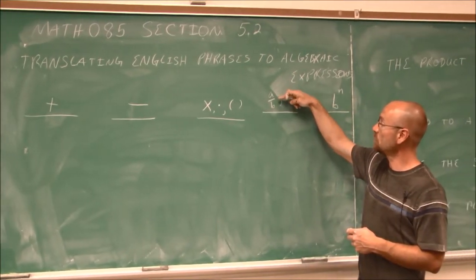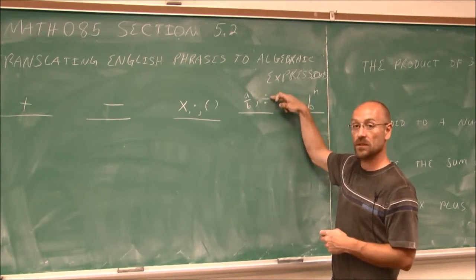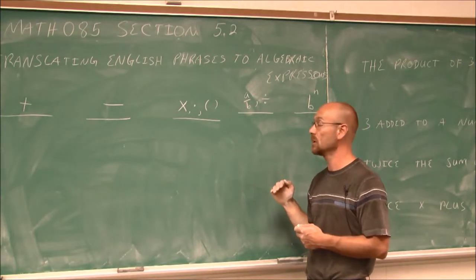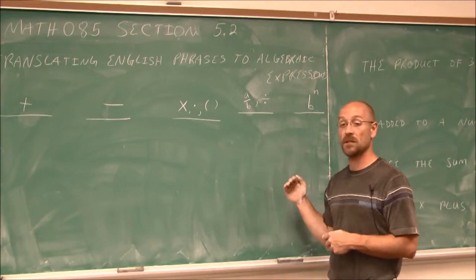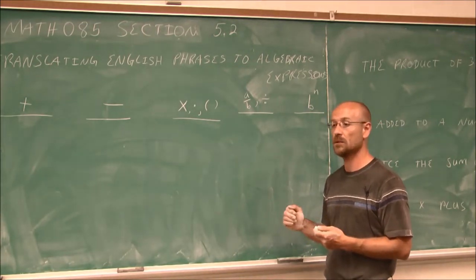Here we have division. I showed a fraction here because that means division, and so does this symbol here. So division would be one word. Quotient is a frequent word, or divide, or divisible by. Sometimes even the word per, like percent means to divide by 100.